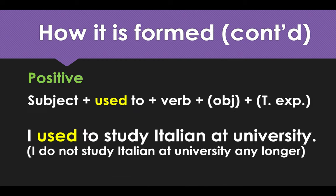What about positive sentences? We need the subject, then 'used to', plus verb, plus maybe object, and plus maybe time expression or whatever comes next. For example: 'I used to study Italian at university' — meaning 'I don't study Italian at university anymore'. This is what it means.